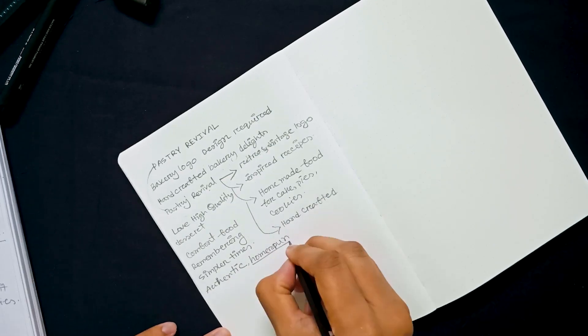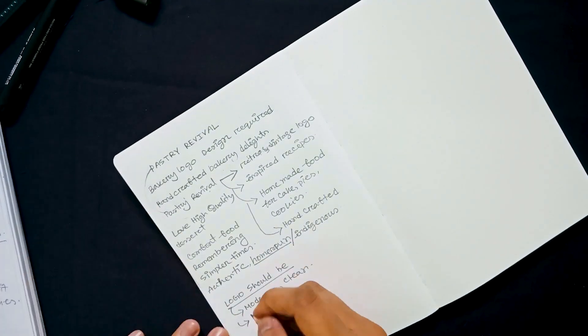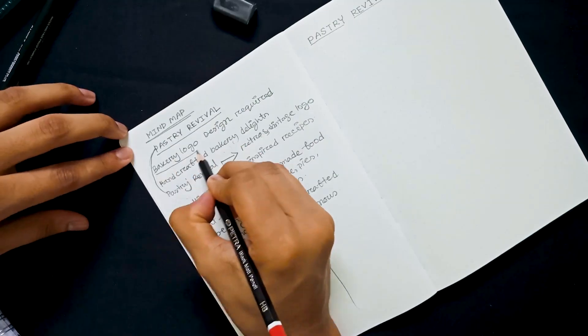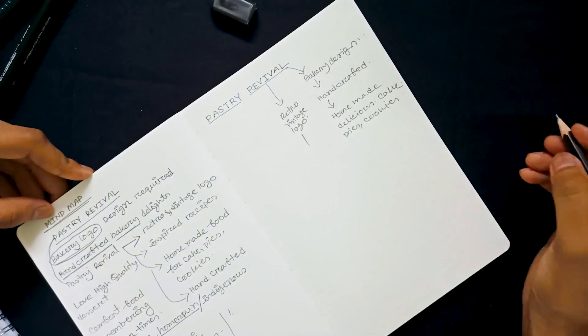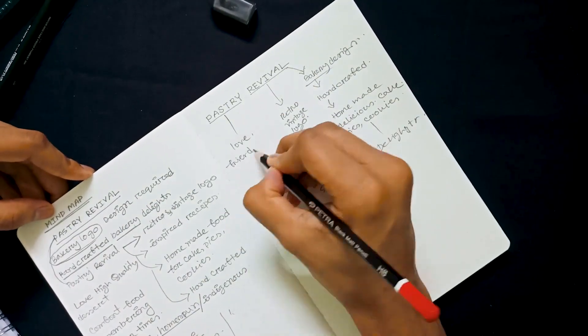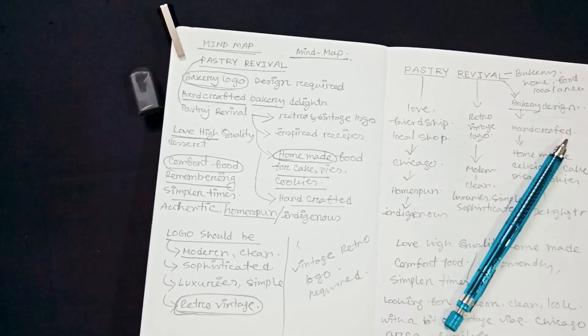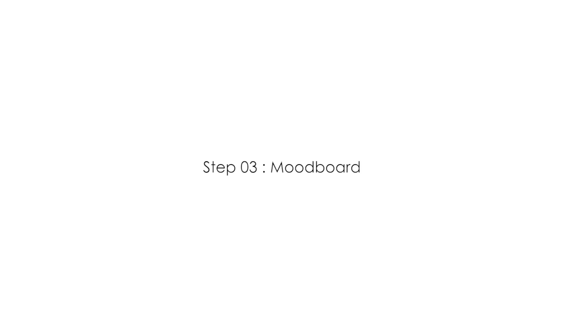Step 2: Mind mapping. It's a very useful technique to think creatively, to break down a logo brief, and it can help you to make new ideas and connections in different ways. After completing the design brief and mind mapping, the next step is creating a mood board.